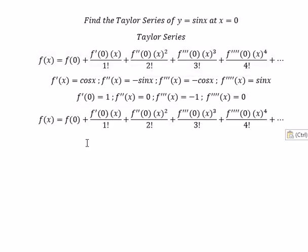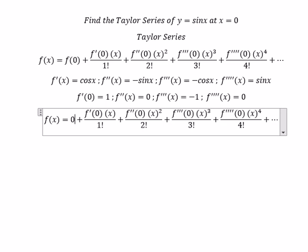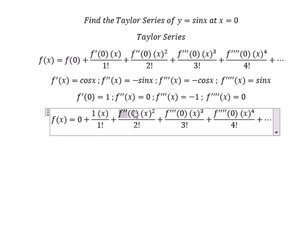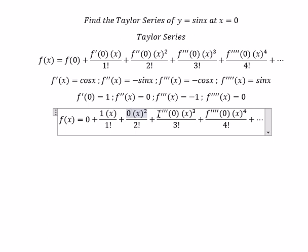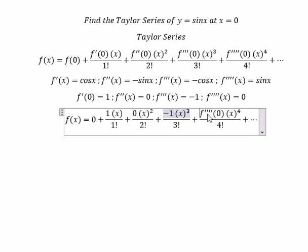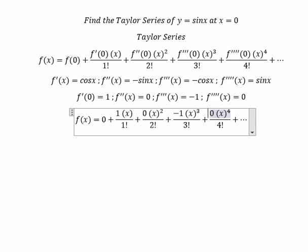So f of zero, that's sine of zero, so you got 0. This one you got 1. This is 0. This is negative 1. This one you got 0. Now we need to simplify.